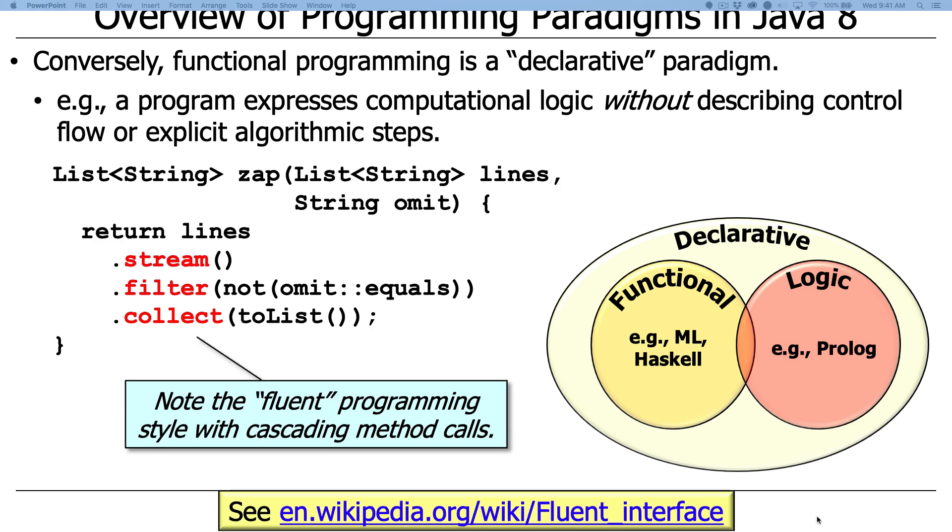What you should observe also is this concept known as fluent programming, where you chain together a sequence of method calls that the next call in the chain works on the output of the previous call. We take the output of stream. That goes as the input to filter. Filter does its magic. It outputs the filtered stream, and then we collect it into a list. So that's called fluent programming. And you'll see that over and over and over again. You'll also see that in non-functional styles. It's very popular in general.